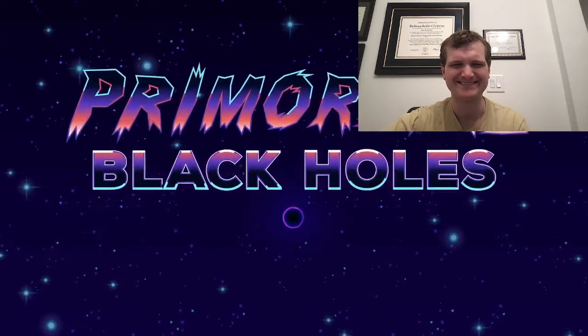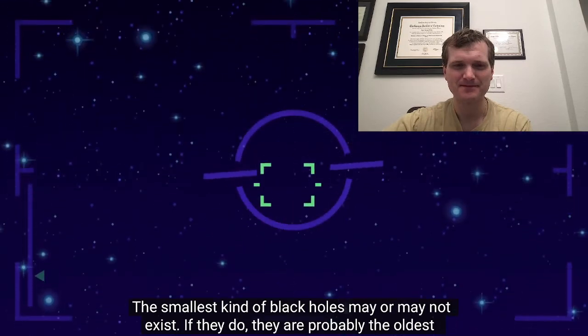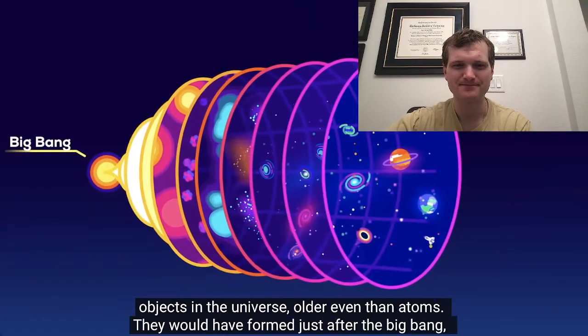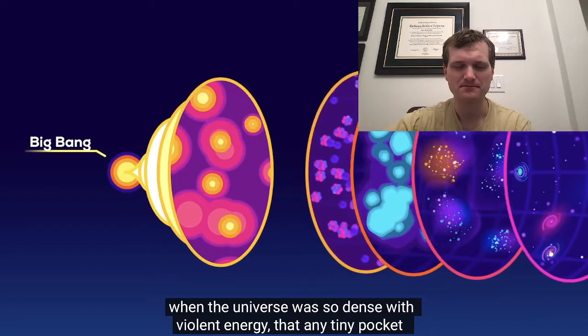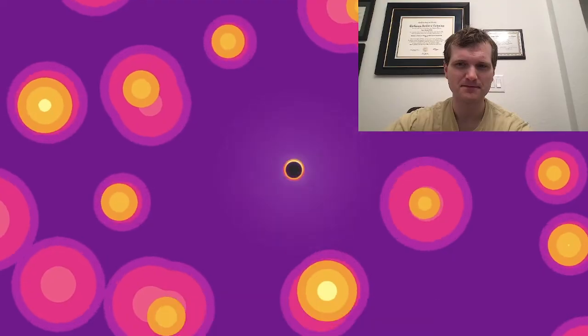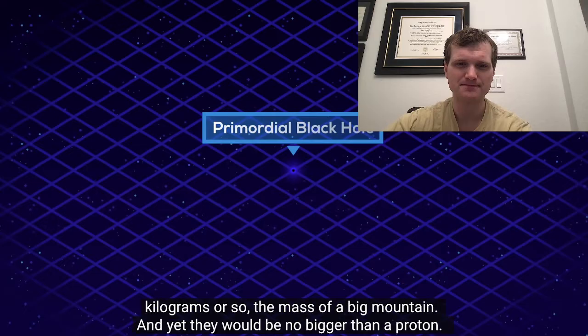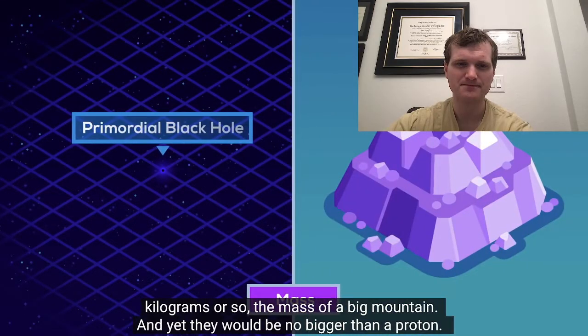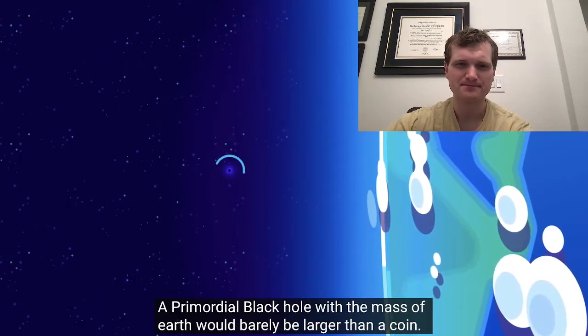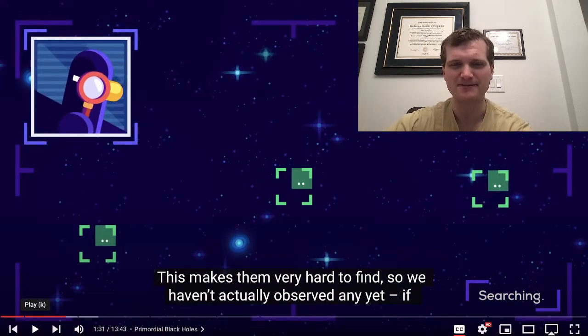Primordial black holes. The smallest kind of black holes may or may not exist. If they do, they're probably the oldest objects in the universe, older even than atoms. They would have formed just after the Big Bang, when the universe was so dense with violent energy that any tiny pocket that was just slightly more dense than its neighbors could produce a black hole. The smallest primordial black hole that could still be around would be a trillion kilograms or so, the mass of a big mountain, and yet they would be no bigger than a proton. A primordial black hole with the mass of Earth would barely be larger than a coin. This makes them very hard to find. Love how dense those things are. It's fascinating.